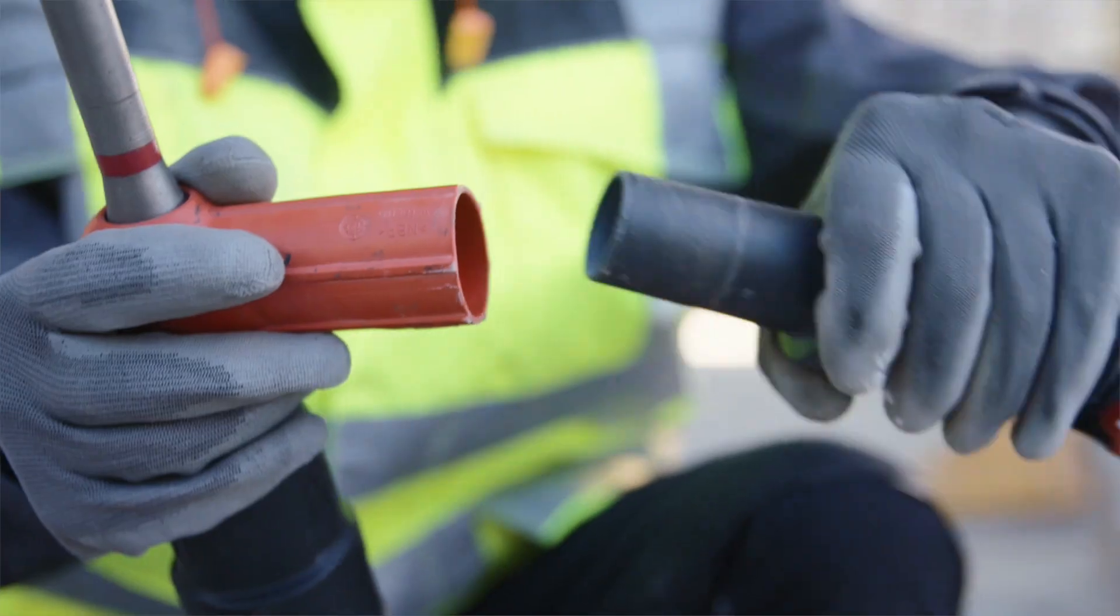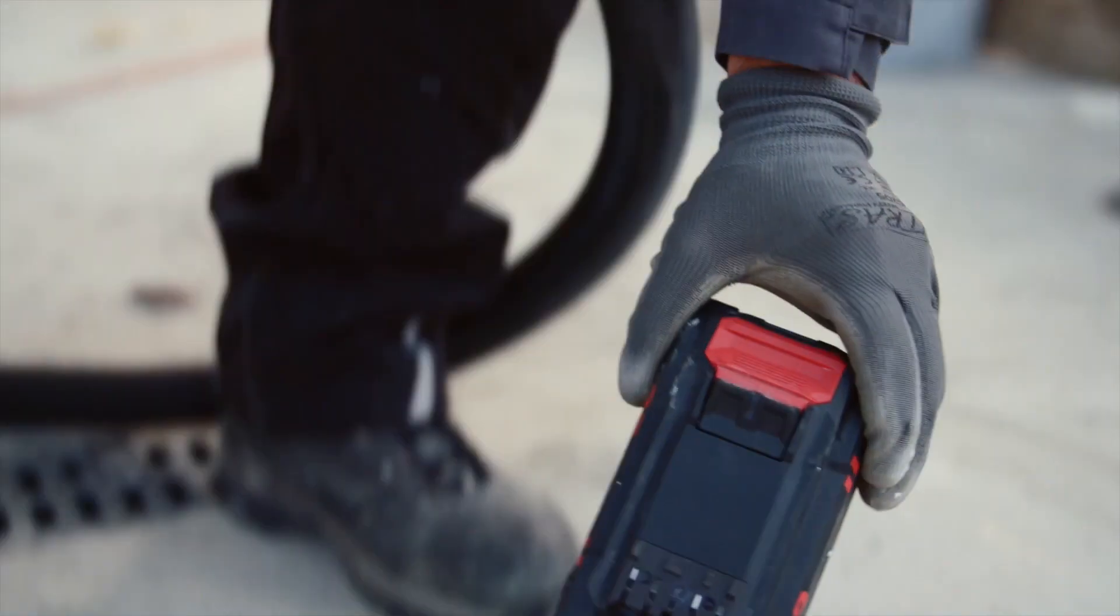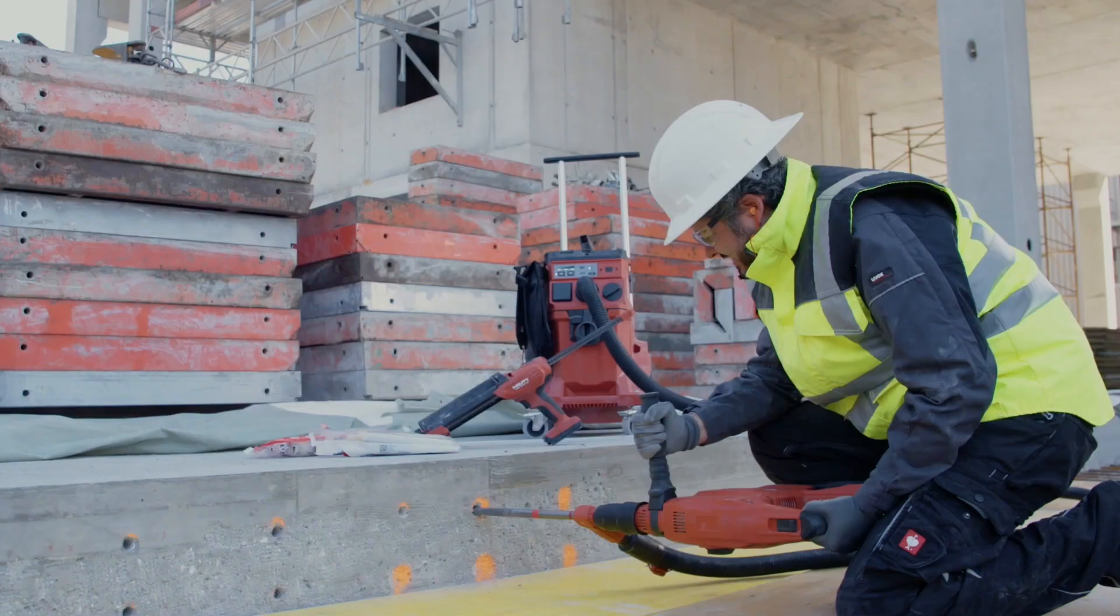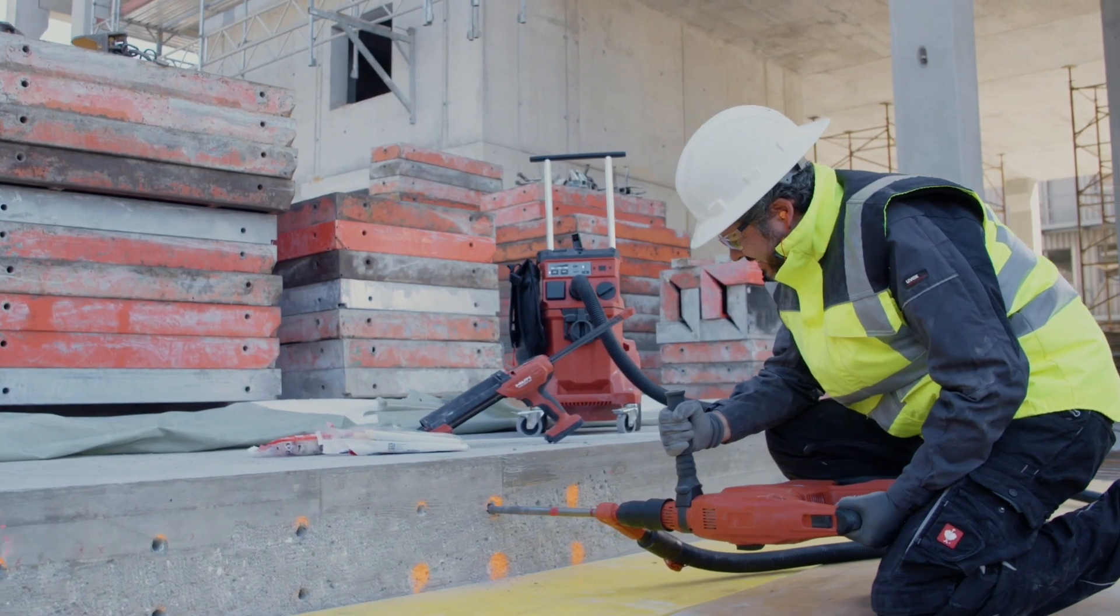FP700R also fits Hilti's Safeset installation system, which combines a hollow drill bit with a vacuum cleaner to save time and reduce dust.